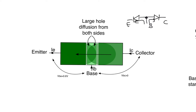A bipolar junction transistor in saturation is a lot more than just that. What's happening here is that the Base-Emitter junction is on, which allows a lot of electrons to flow from the Emitter into the Base. The Base-Collector junction is also on and the Collector is n-type, so this allows electrons to diffuse from the Collector into the Base. The Base is also going to push holes into the Collector and holes into the Emitter. As we talked about in the active mode of operation, the holes that the Base pushes into the Emitter are much less than the electrons that the Emitter pushes into the Base.